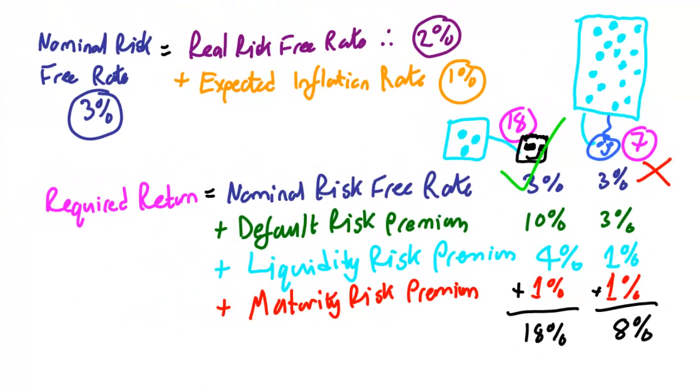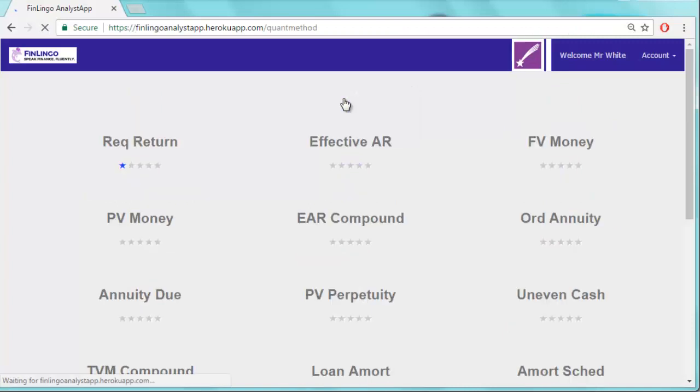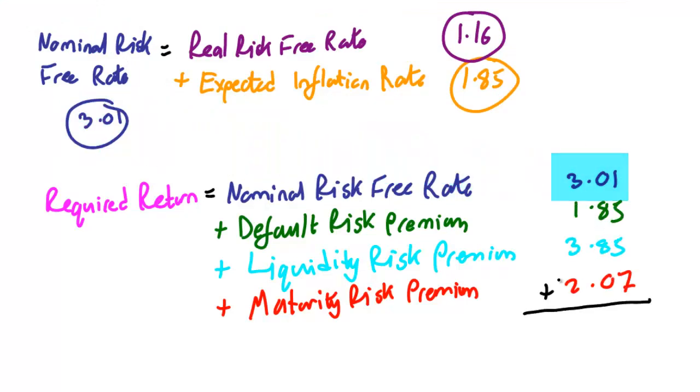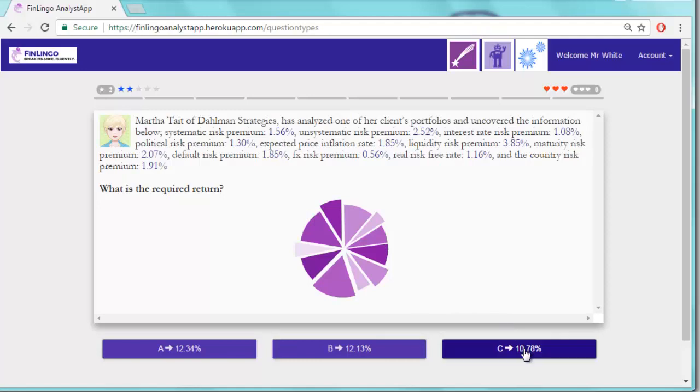And that's about it for the required rate of return. Let's try an example on finlingo.com. First, isolate all the key values. Then note them down by plugging the right numbers into the right parts of the two different equations. Now check if the answer comes up on finlingo. Now select it.